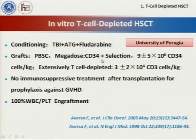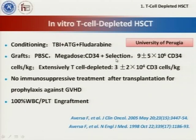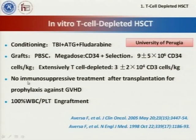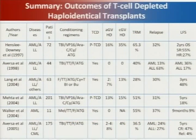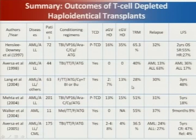This is the protocol developed by the Perugia group, which used T-cell depletion for the prevention of GVHD and mega-doses of CD34 selection. The incidence of GVHD was very low. With this protocol, they don't use immunosuppression agents after transplantation. However, many patients died of infection or relapse.